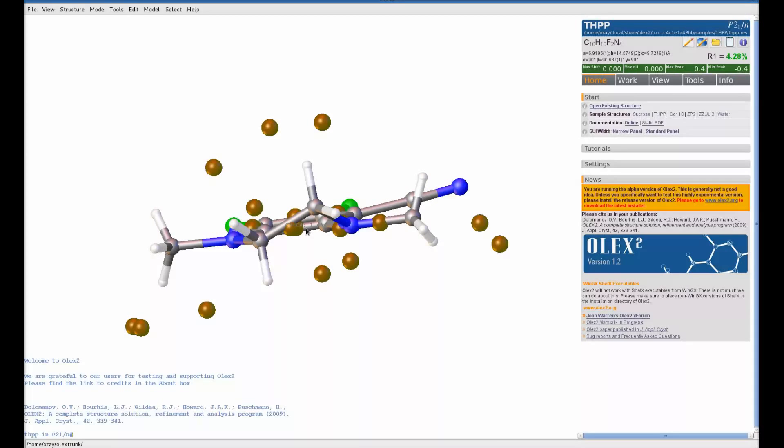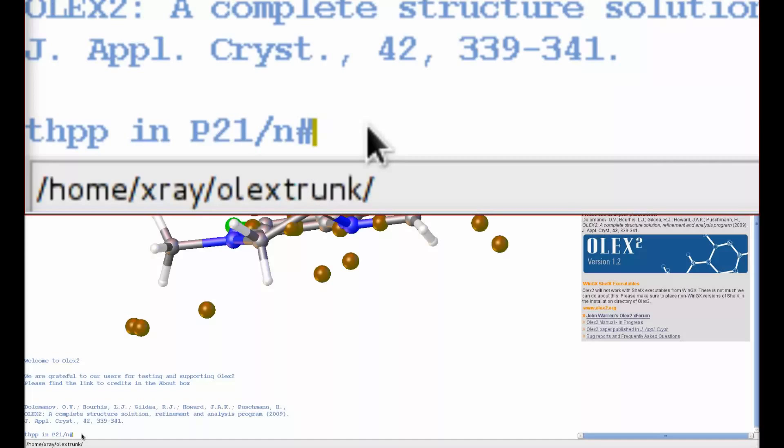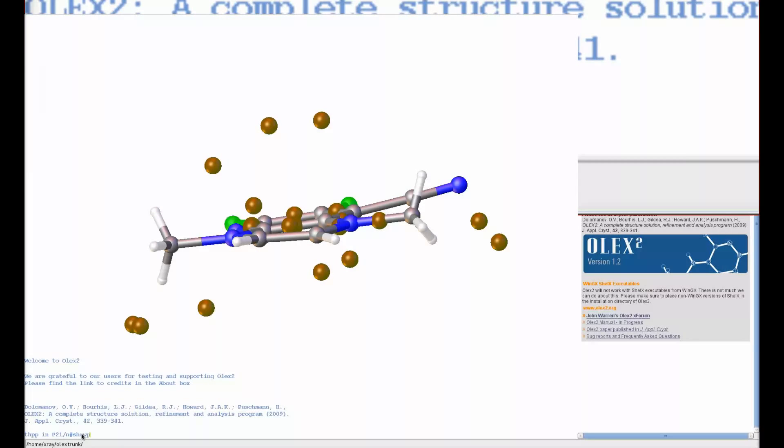If you wanted to see the other disordered component, we can do the same command: SHOWP 0 2. That will just show us the second component.